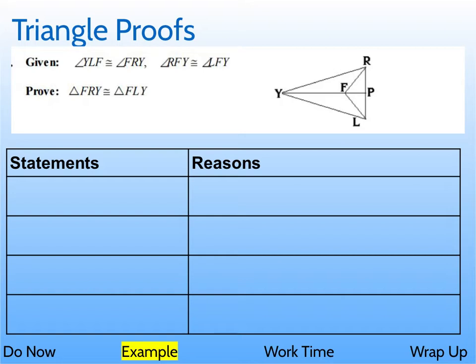One thing that's really helpful in this proof is there's more information than necessary here. This whole segment over here is not going to help you because you're looking at triangle FRY right here and triangle FLY right here. So this whole part you can basically ignore.